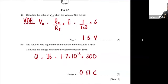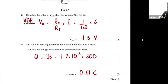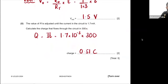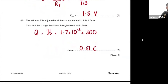R is adjusted until the current is 1.7 mA. Calculate the charge flowing through the circuit in 300 seconds. Using Q = It: I = 1.7 × 10⁻³ A, t = 300 s. Multiplying gives the charge in coulombs. Remember to include units wherever they are not already given.